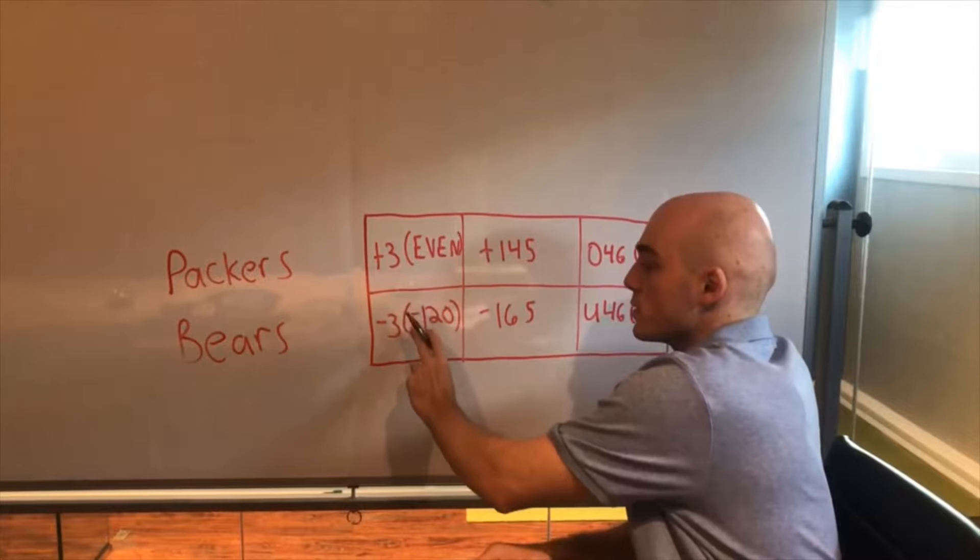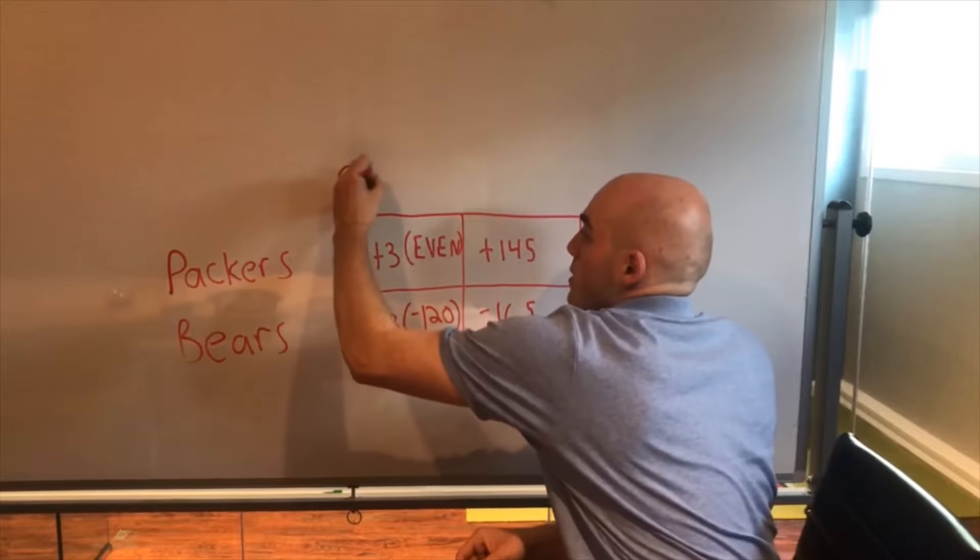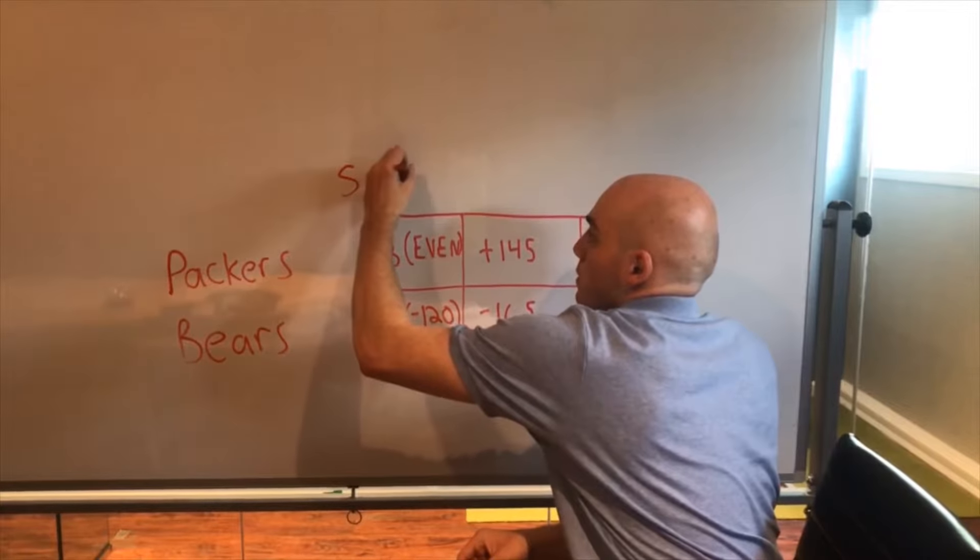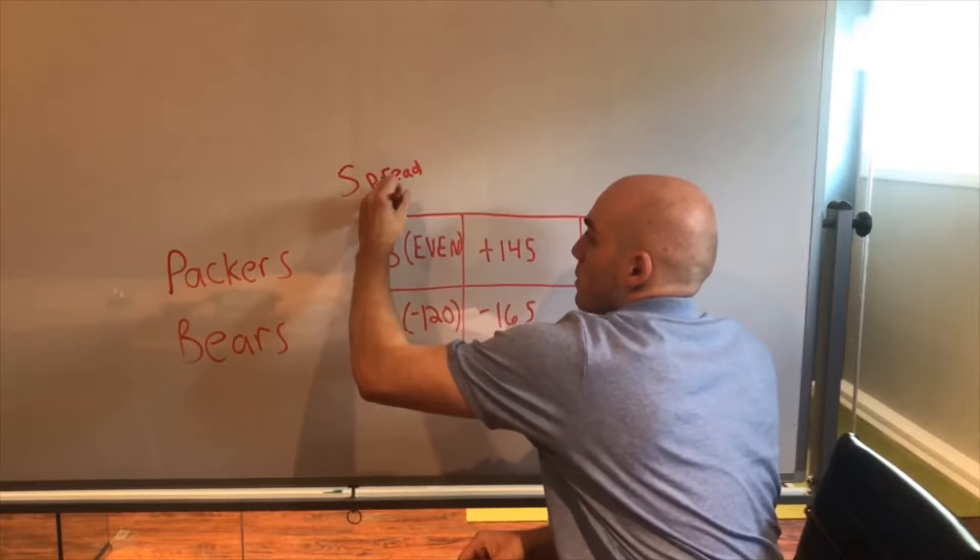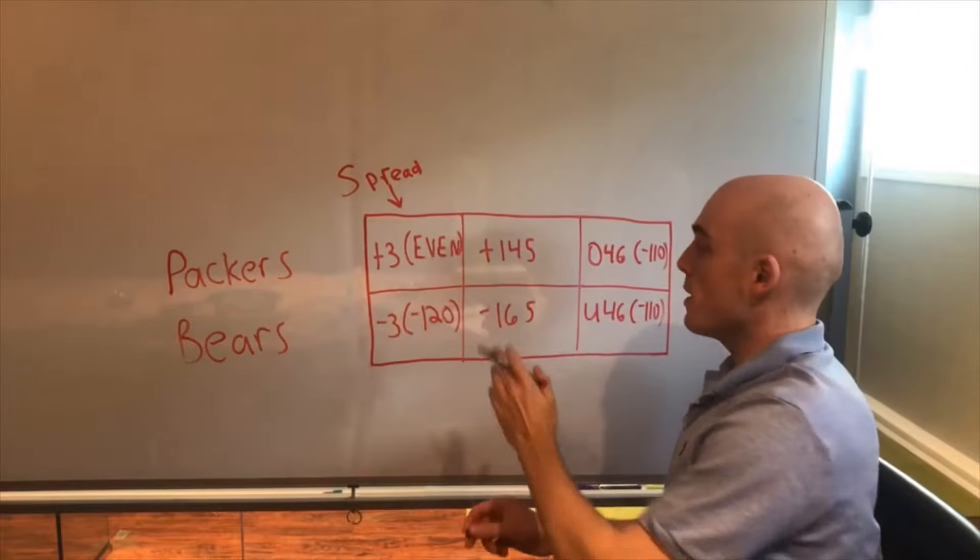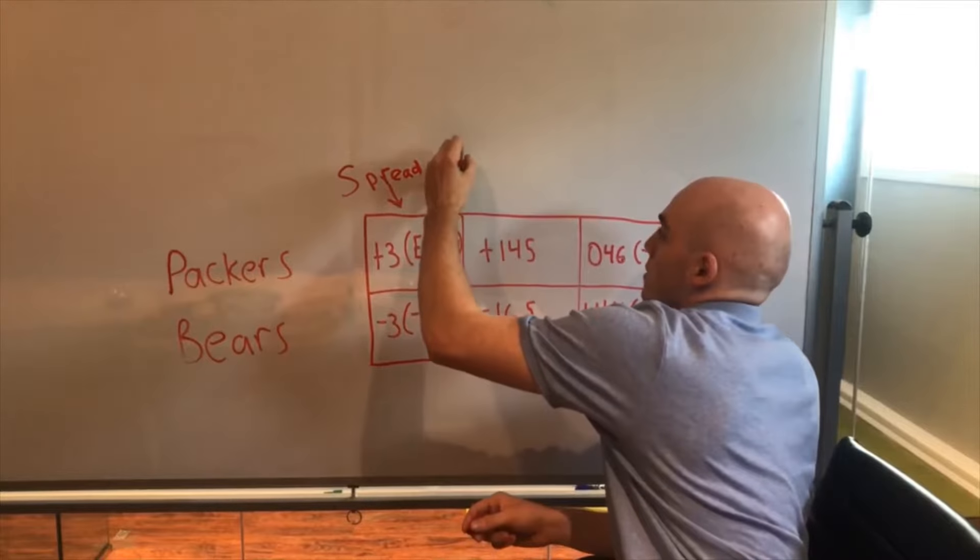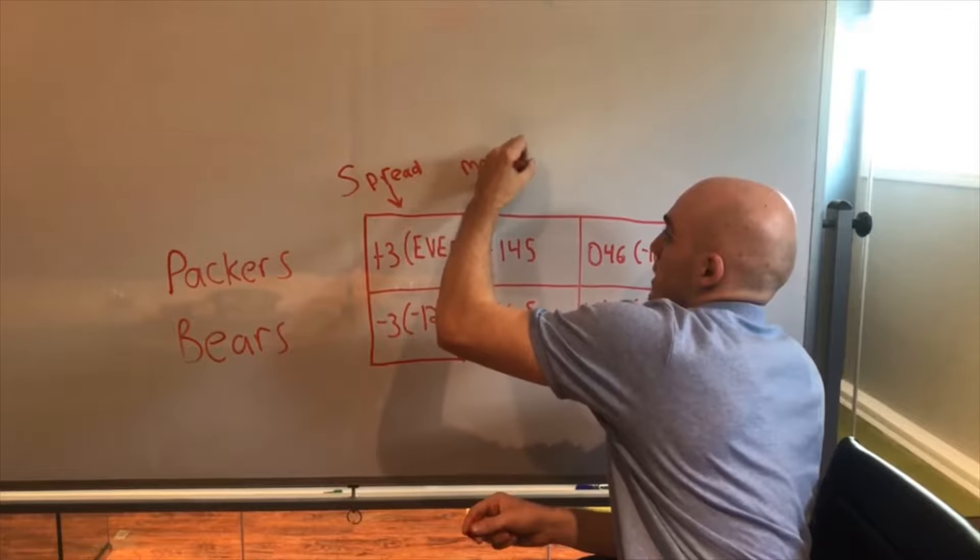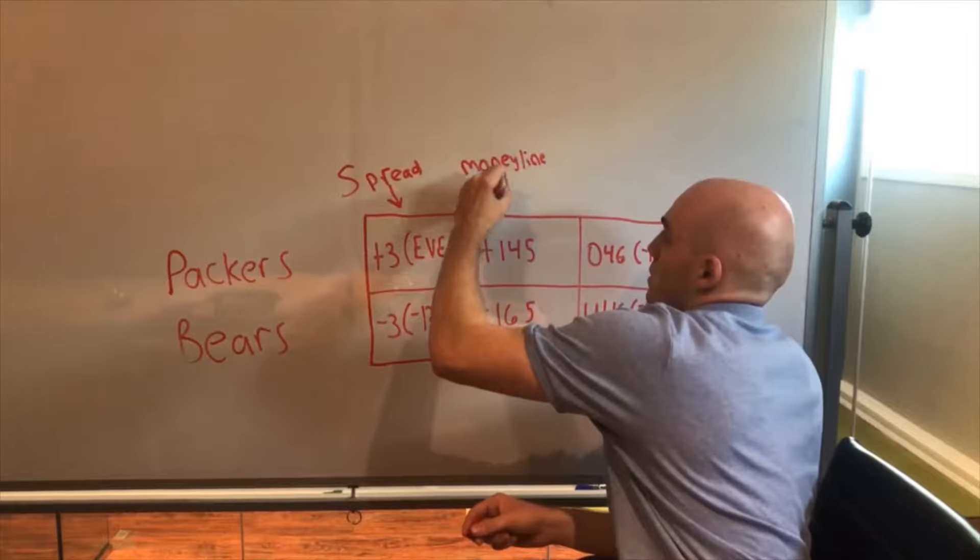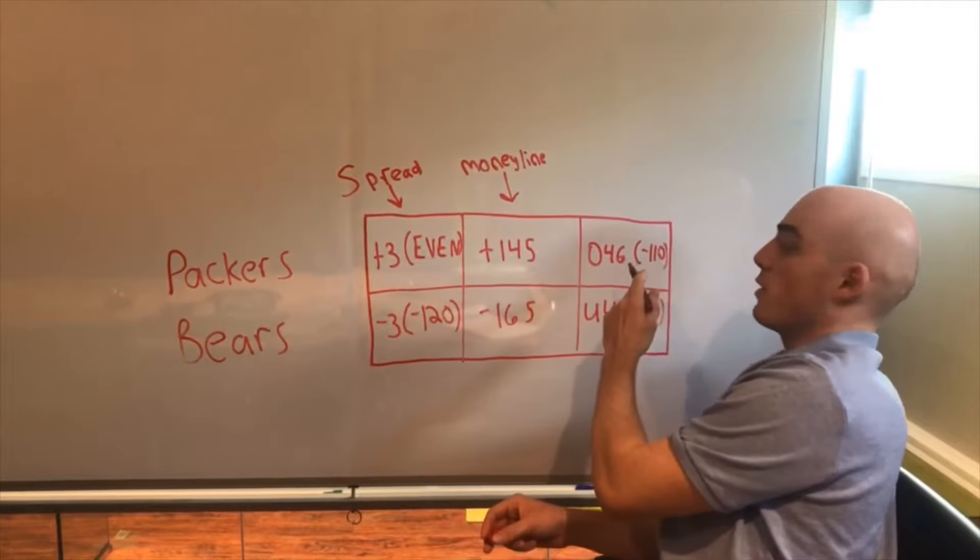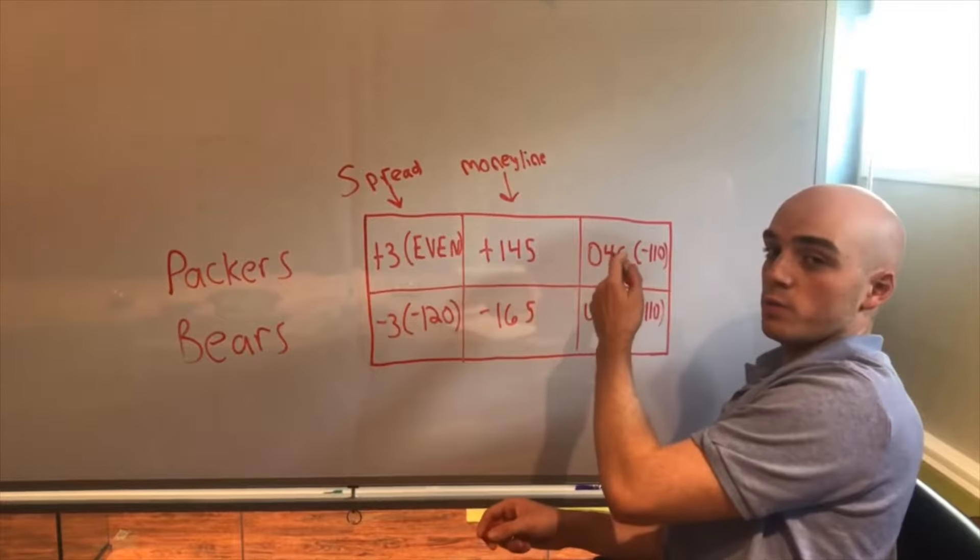You see right here you have plus three, minus three, this is what we call the spread, so that's a spread bet. Then in the middle we have our money line bet, which is what we're focused on today. And at the end here we have our total or over-under, whatever you prefer to call it.